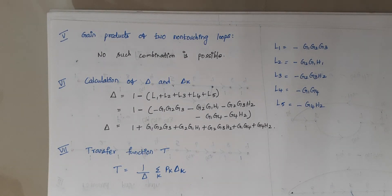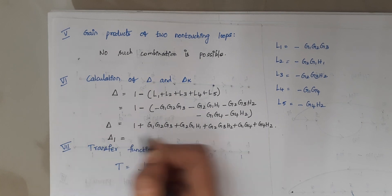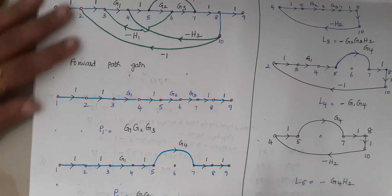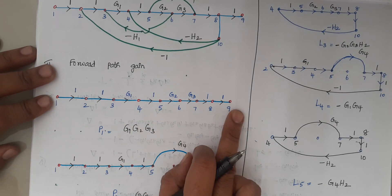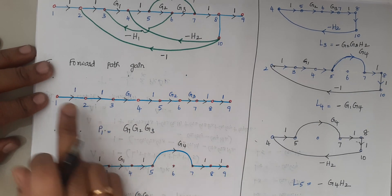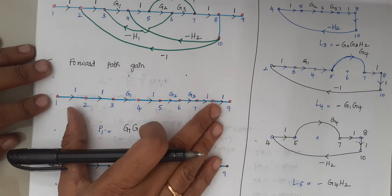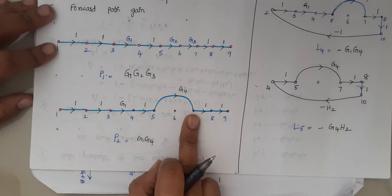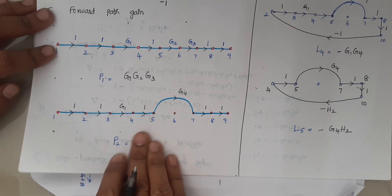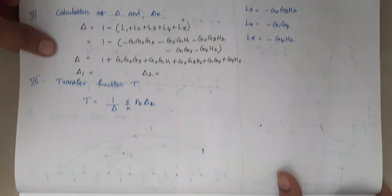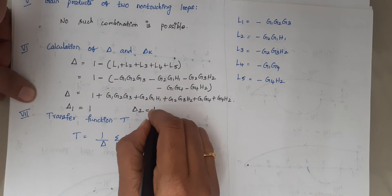We need to calculate Δ1 and Δ2 for the two forward paths. The first forward path covers almost all nodes, so there is no loop that does not touch it, making Δ1 = 1. Similarly, there is no loop that avoids the second forward path, so Δ2 = 1.